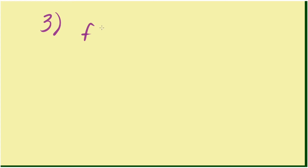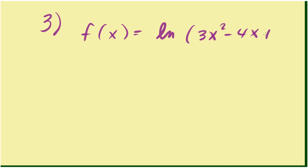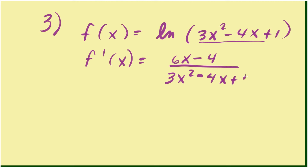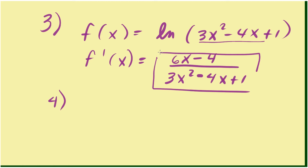Let's take this example. We have the natural log of 3x squared minus 4x plus 1. To find the derivative, f prime is going to be the derivative of this expression, which is 6x minus 4, over that same expression 3x squared minus 4x plus 1. We can't reduce it further, so that's your final answer.